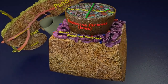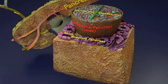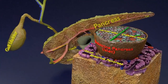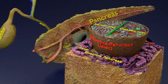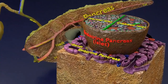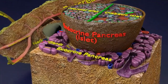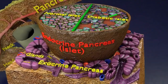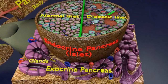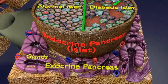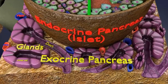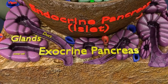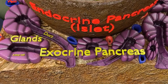The pancreas is part of the gastrointestinal system that, as an exocrine gland, makes and secretes digestive enzymes into the intestine, and also as an endocrine gland, makes and secretes hormones into the blood to control energy, metabolism, and storage throughout the body.